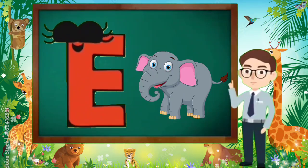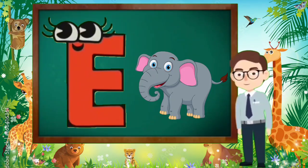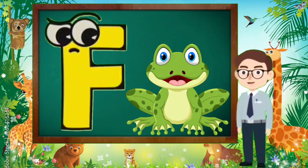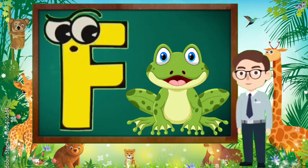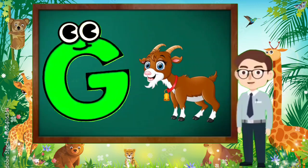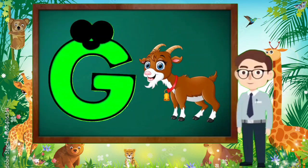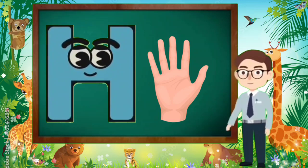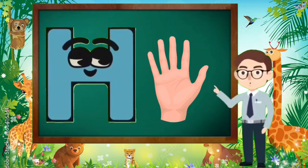E is for Elephant, E-E-Elephant. F is for Frog, F-F-Frog. G is for Goat, G-G-Goat. H is for Hand, H-H-H-Hand.